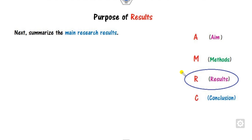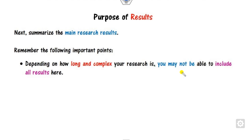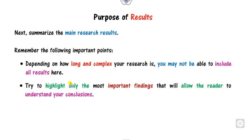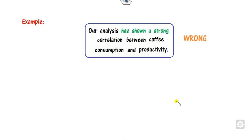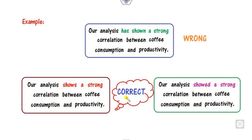The third component is Results, which summarizes the main research findings you produced. Depending on how long and complex your research is, you may not be able to include all results. Try to highlight only the most important findings that will allow the reader to understand your conclusion. Write this in the present or past tense. For example, 'this has shown' is not the correct form — you should use either a present or past tense construction. That is the overview of the results and the correlation found.